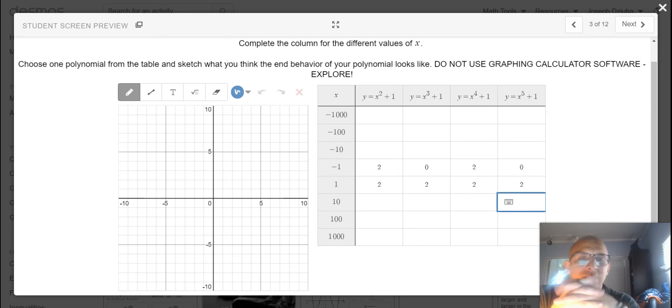So your task is to complete the rest of the table and then select one of these functions. You can state which one you're wrapping.